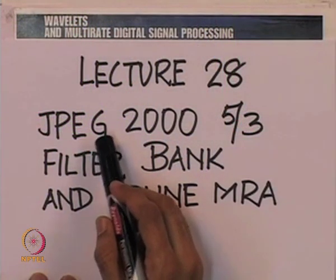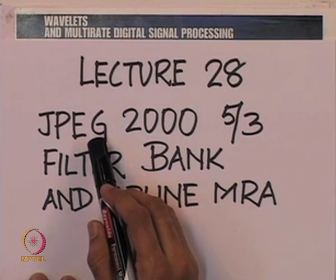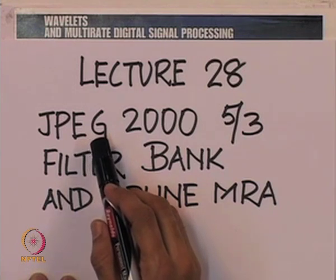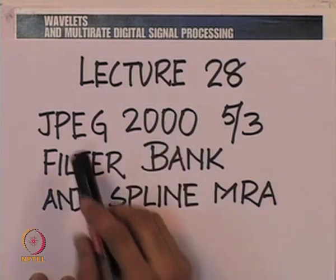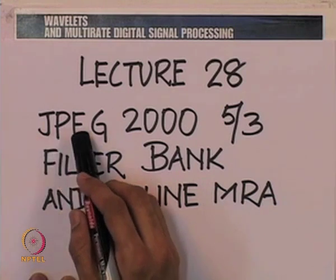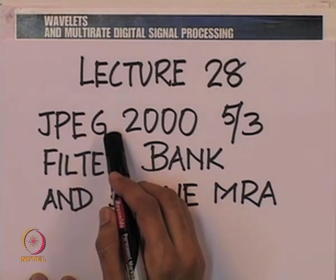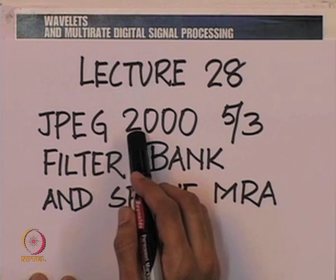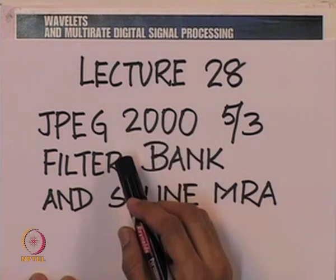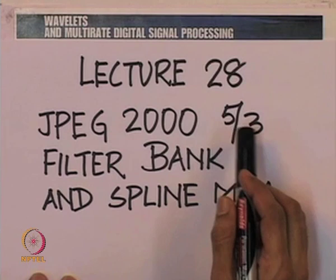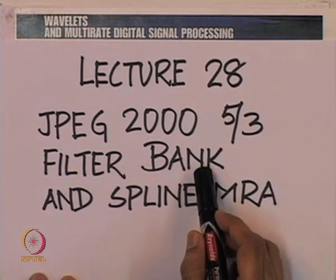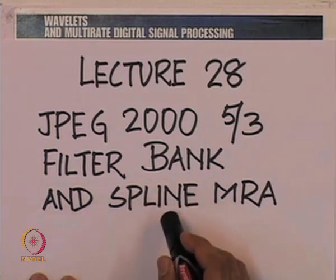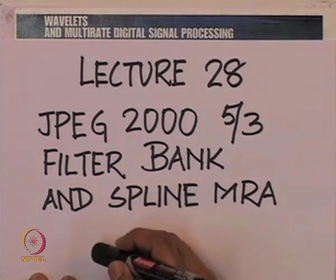You will recall that in the previous lecture we had briefly introduced the recent standard for data compression called JPEG 2000 — Joint Photographic Experts Group standards introduced around the calendar year 2000. We were going to talk about what is called the 5-3 filter bank and associated with it, what is called the spline multiresolution analysis.